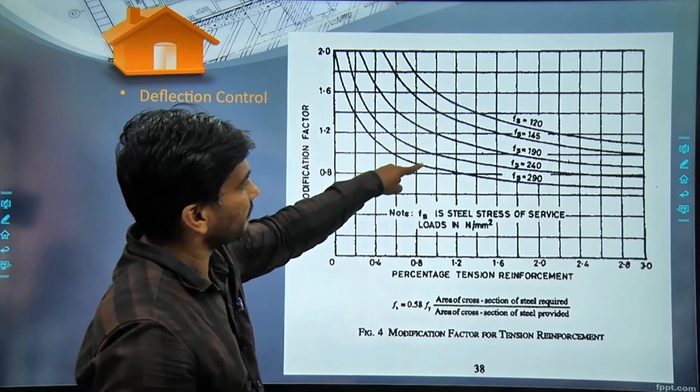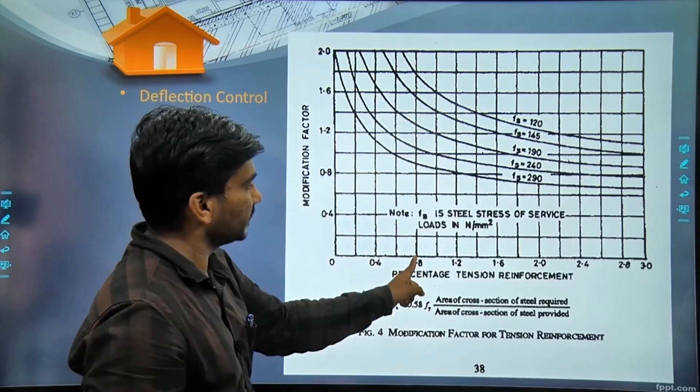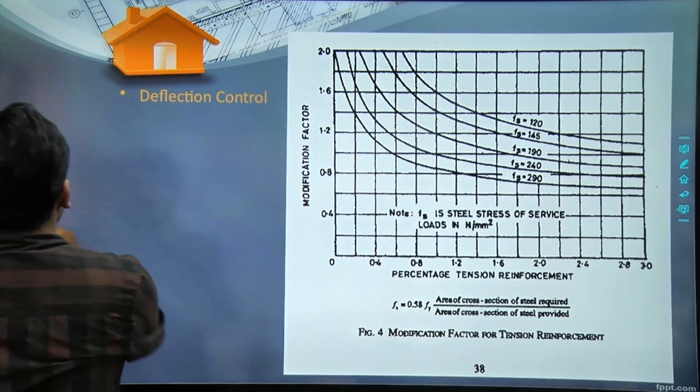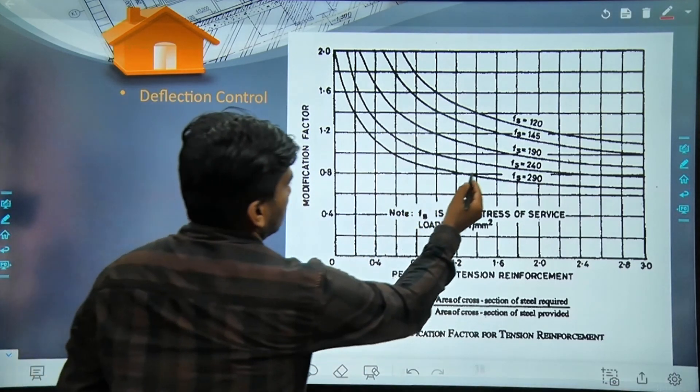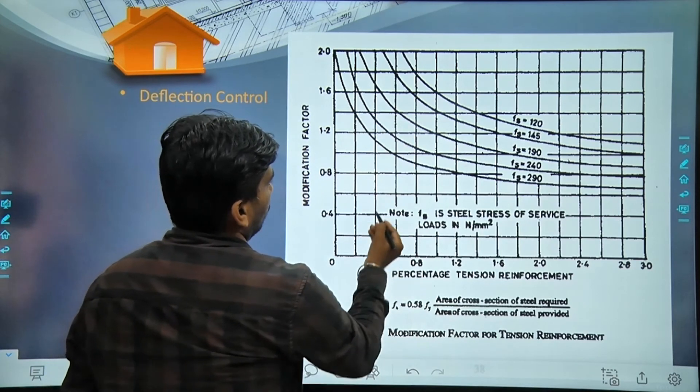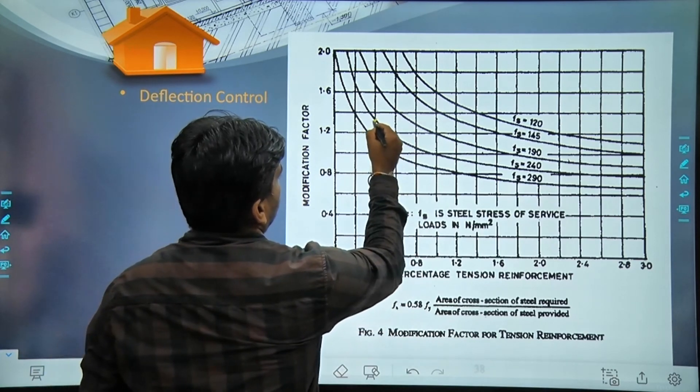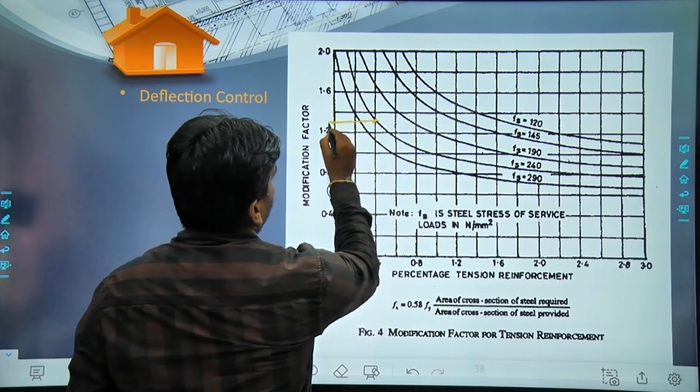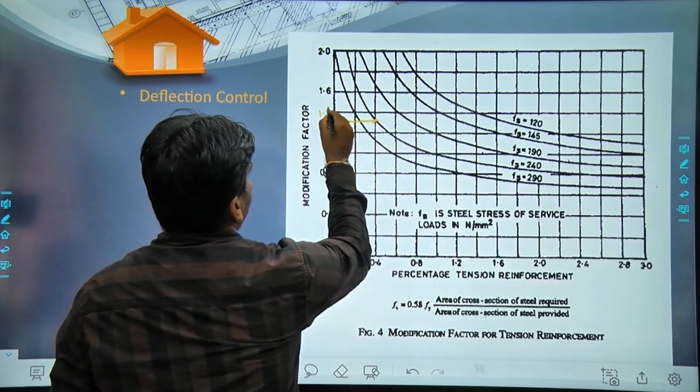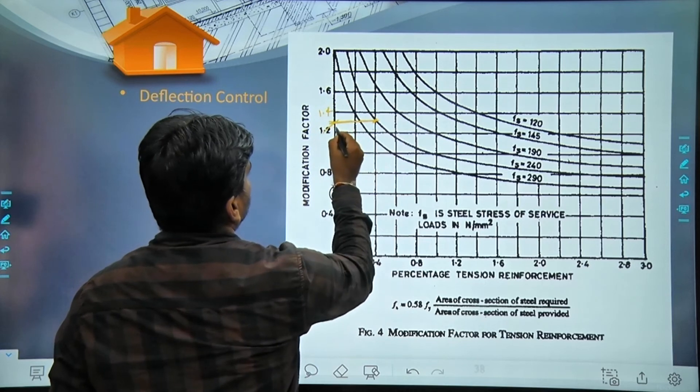Once we get fs, we have to choose the fs line and percentage of steel, and where these two intersect we will consider. For example, if fs is 240 and percentage of steel is 0.4, then where do 0.4 and 240 cross? Here, they cross here.